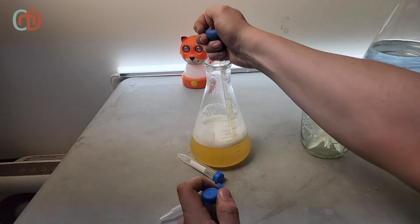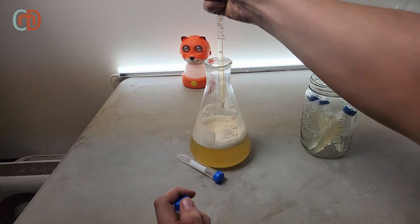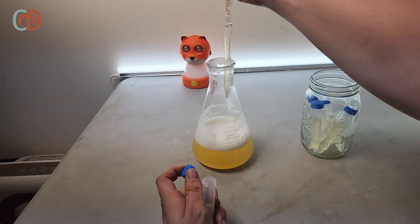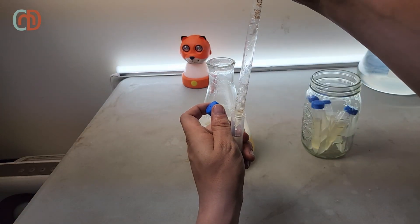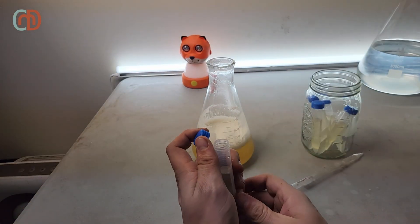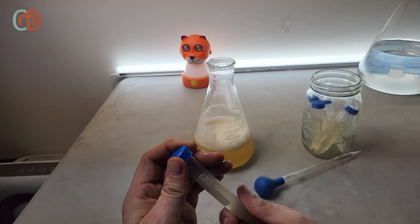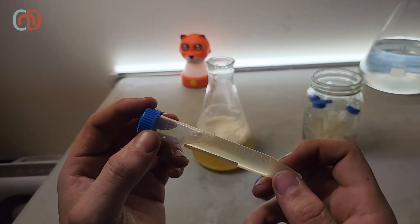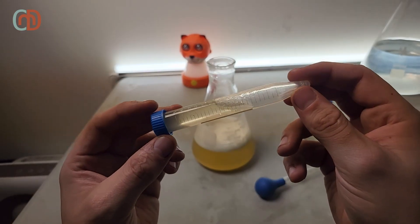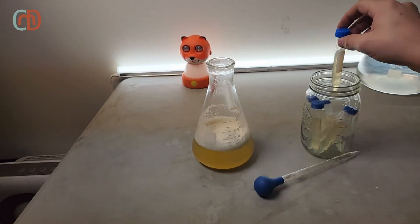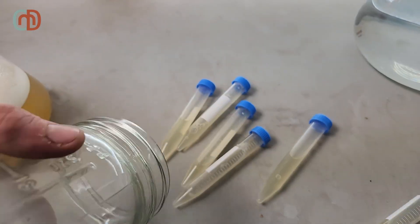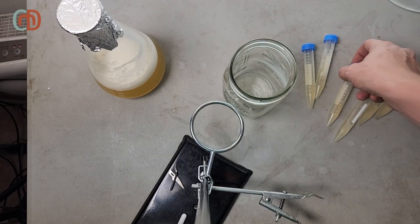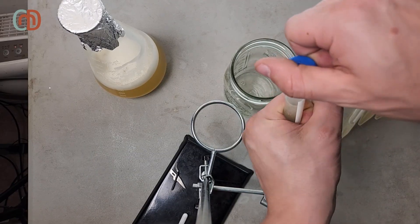Unlike mycology, brewing is not a sterile art form. It's important to be very sanitary, but sterility is not required. This is because the yeast can outcompete and outgrow almost any other microbe that could be present in small quantities inside of your brew. This is only possible if you have enough yeast cells to start with, which is why we need to slowly propagate them over time to create a starter.